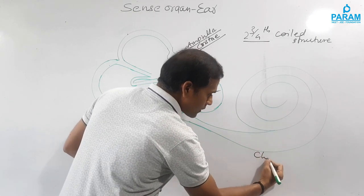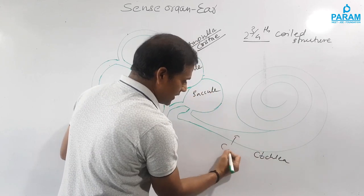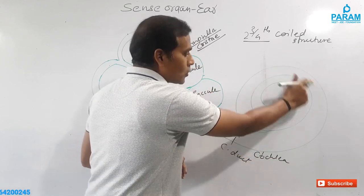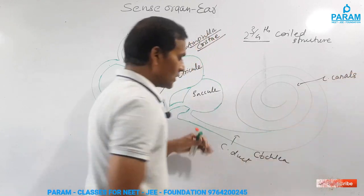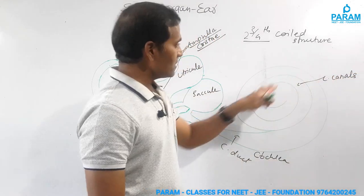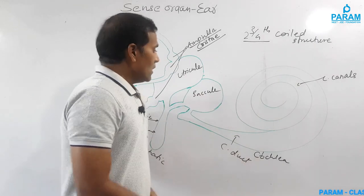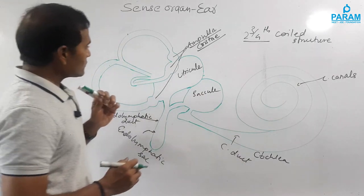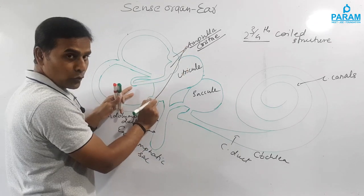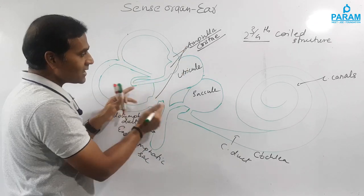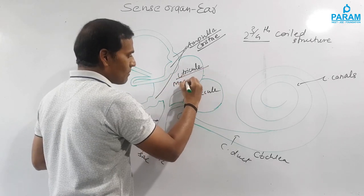The cochlea is made up of the cochlear duct and cochlear canals, and together these two constitute your cochlea. The cristae are present in the ampullar region of the semicircular canals, and in the saccule and utricle there is a presence of the macula.